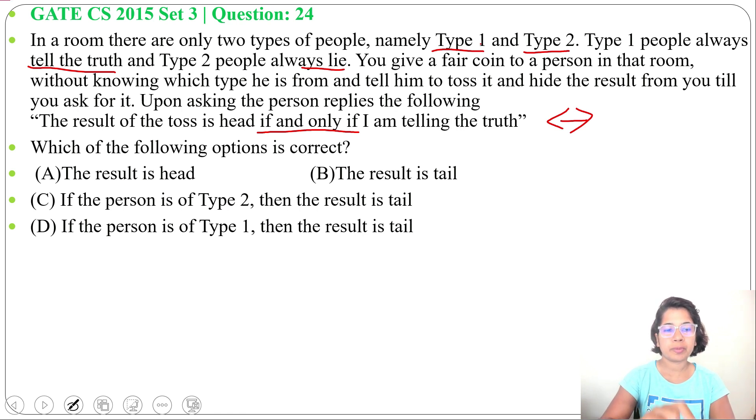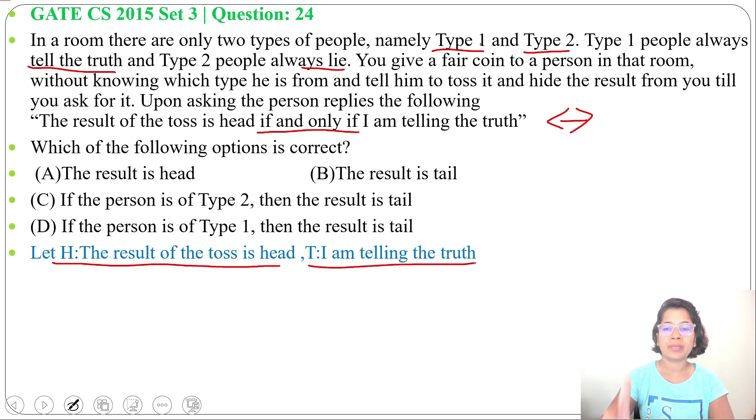Now let me take two propositional variables, one for the result of the toss is head and another for I am telling the truth. Let H for the result of the toss is head and T for I am telling the truth. Now there are two cases, the person may be from Type 1 or may be from Type 2.